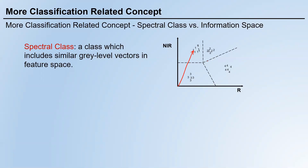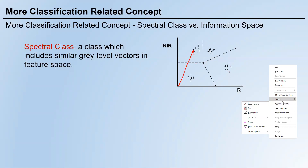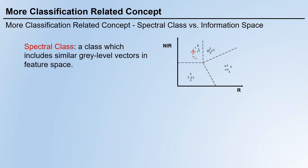In this feature space, we have four classes, and each one can be considered a spectral class. In feature space, we don't have specific land character types or land use — we only know there are four clusters of pixels. Each cluster includes similar pixels in terms of spectral features that are close to each other, so it's natural to consider them as one class. That's a spectral class.